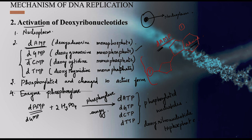These phosphorylated nucleotides act as substrates in the replication process and provide energy for the polymerization reaction in further steps. So in the second step, the four deoxyribonucleotides are phosphorylated using phosphoric acid in the presence of phosphorylase to form deoxyribonucleotide triphosphates.